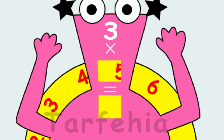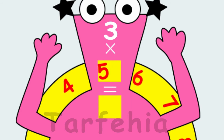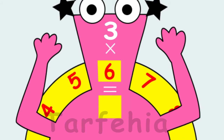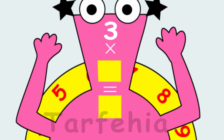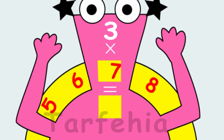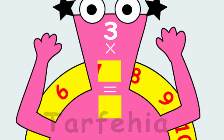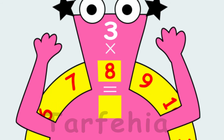Three times five equals fifteen. Three times six equals eighteen. Three times seven equals twenty-one. Three times eight equals twenty-four.